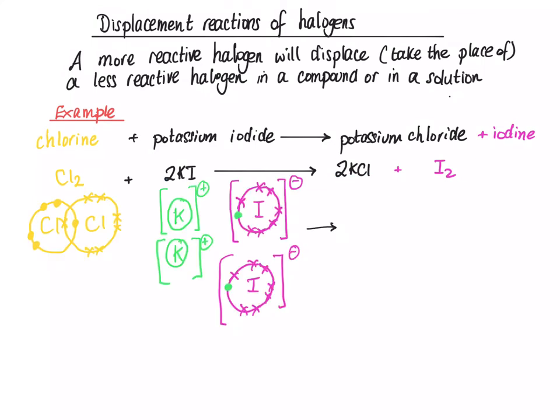And we can show this as a dot-cross diagram. So, chlorine Cl₂ has 7 electrons in its outer shell. And it forms a covalent bond between two chlorine atoms.